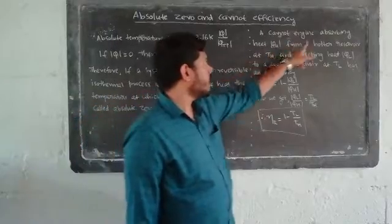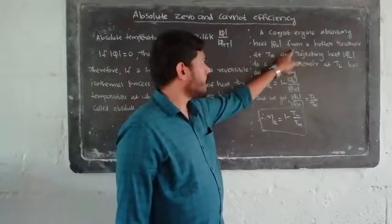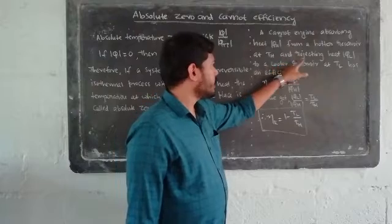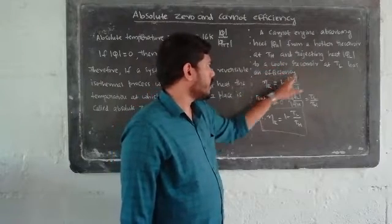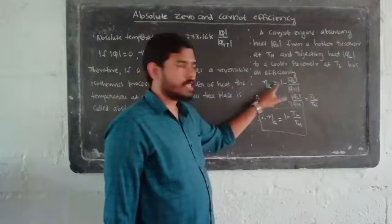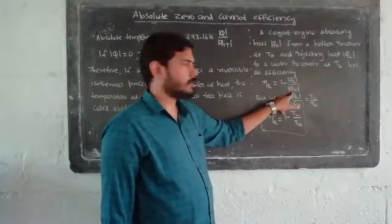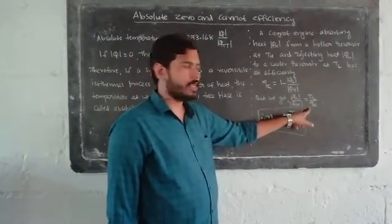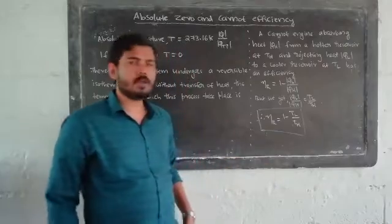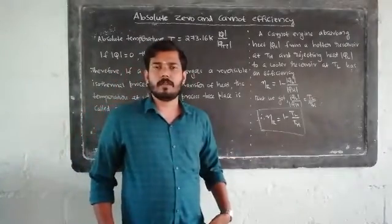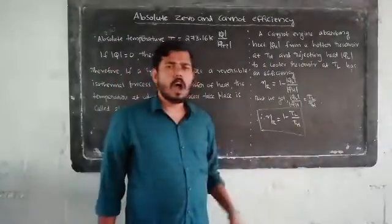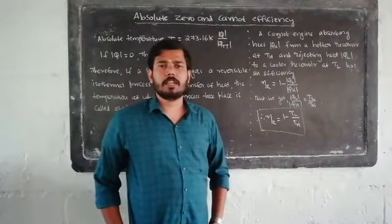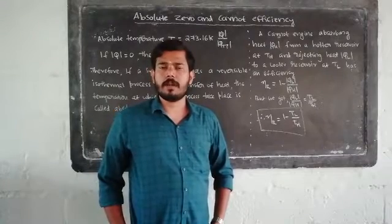Carnot engine absorbs heat QH from a reservoir at TH and rejects heat QL to a cooler reservoir at TL. The efficiency is ETR equals 1 minus QL by QH. Since QL by QH equals TL by TH, therefore ETR equals 1 minus TL by TH.